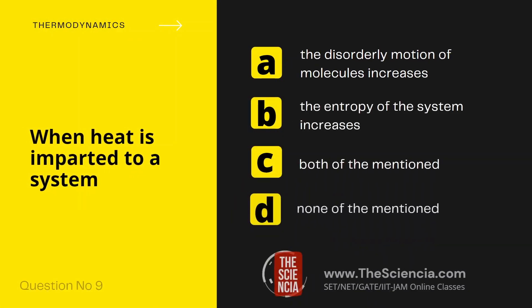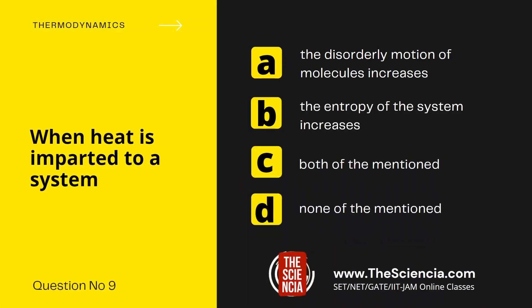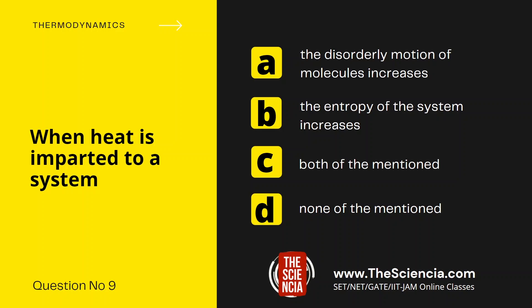Next question, that is question number 9. When heat is imparted to a system — Option A, the disorderly motion of molecules increases. Option B, the entropy of the system increases. Option C, both of the mentioned, that is Option A and B. And Option D, none of the mentioned.